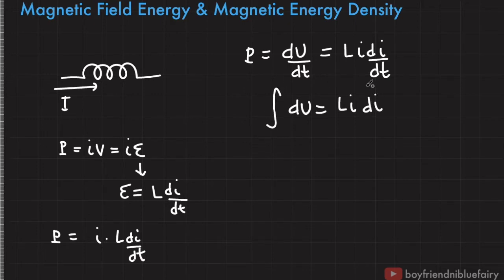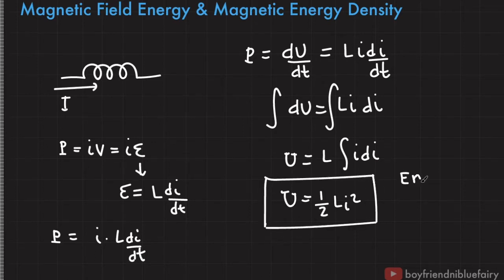So integrating both sides, I'll have an expression for the energy stored in the inductor. But since this is in the form of magnetic field, this expression is actually the magnetic field energy. So L is constant, I can take this outside the integral sign. My final expression is U equals one half L I squared. And this is the energy stored in an inductor.